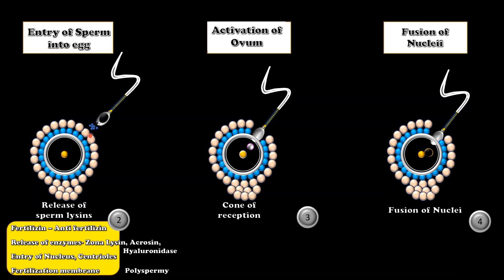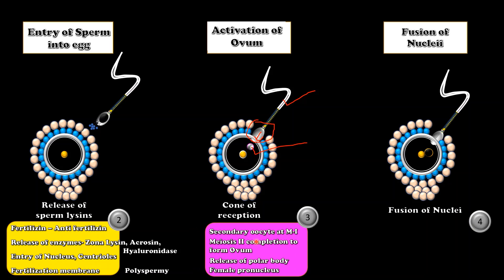These enzymes dissolve the corona radiata and zona pellucida in front of the sperm. A small fertilization cone develops from the surface of the ovum in the region of the animal pole. The sperm head comes in contact with the fertilization cone, and the head and part of the neck enter the ovum, releasing the nucleus and centrioles into the cytoplasm, while the tail remains outside. Entry of sperm initiates cortical granule reactions which convert the plasma membrane into a fertilization membrane, preventing polyspermy.